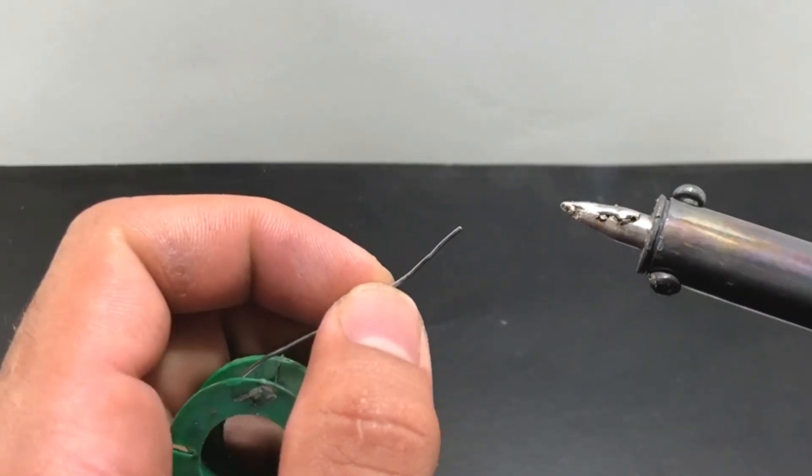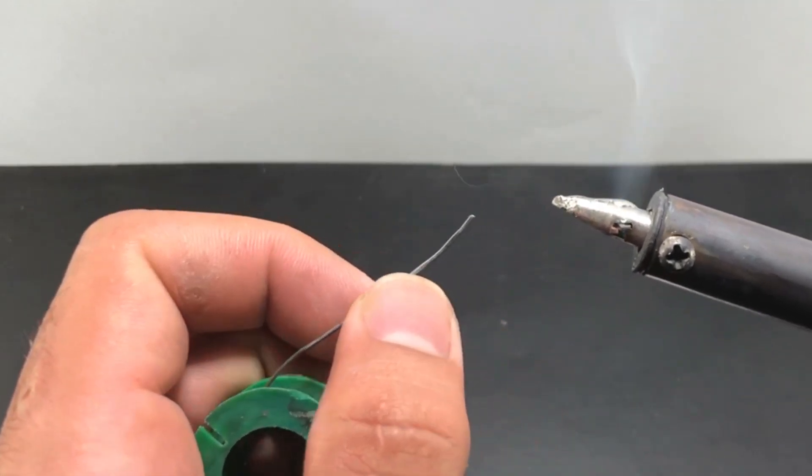As you can see the soldering wire melts quickly and melts all the points of the wire rod.